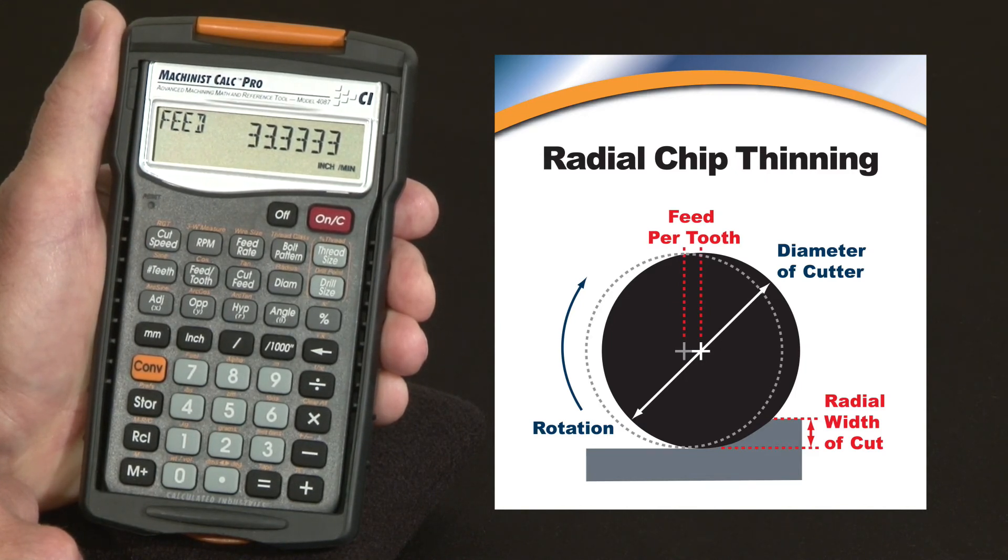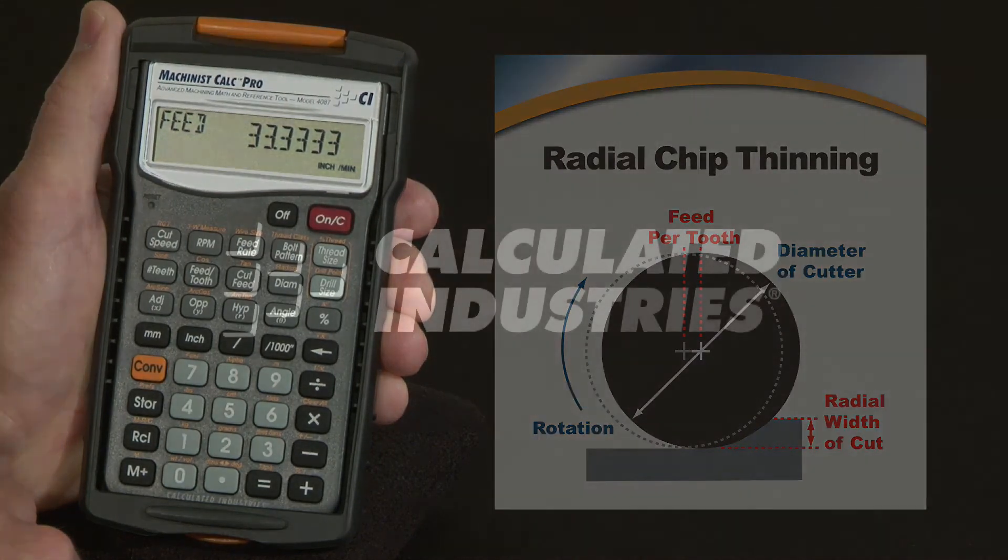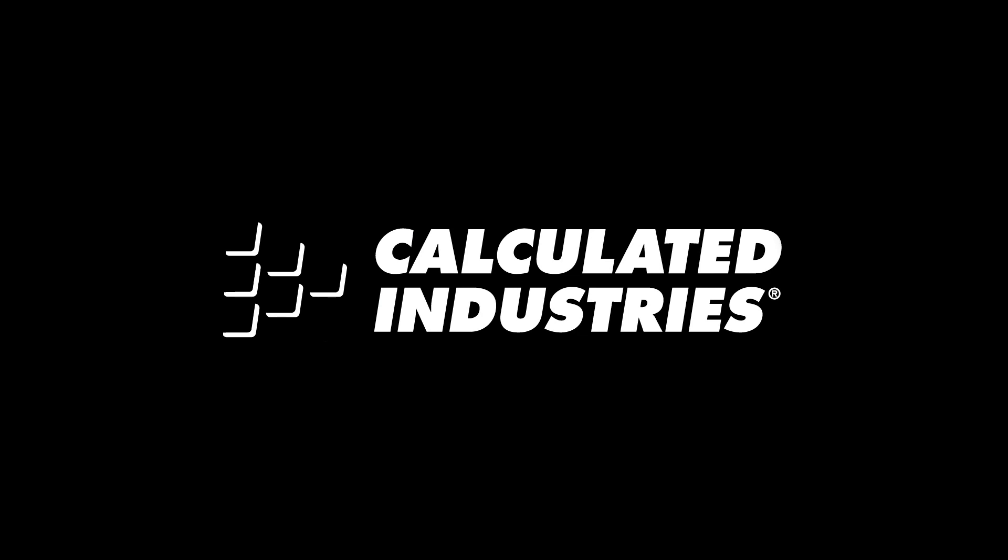So that's a quick overview on the feed and speed functions with the radial chip thinning. For more details, you can download our user guide at www.calculated.com slash support.